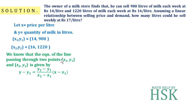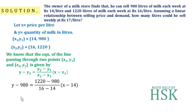We know that the equation of a line passing through (x1, y1) and (x2, y2) is given by: y − y1 = [(y2 − y1) / (x2 − x1)] × (x − x1). Applying this formula with (x1, y1) = (14, 980) and (x2, y2) = (16, 1220), we get: y − 980 = [(1220 − 980) / (16 − 14)] × (x − 14).